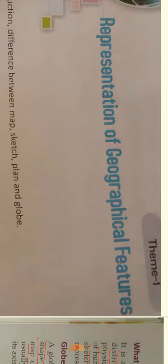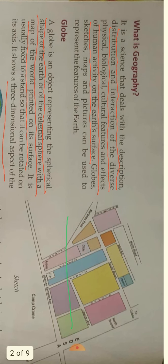Let us see the lesson. What is geography? It is a science that deals with the description, distribution, and interaction of the diverse physical, biological, and cultural features and effects of human activity on the earth's surface. Globes, sketches, maps, and pictures can be used to represent the features of the earth.